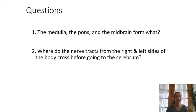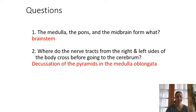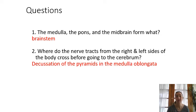Review question: the medulla, pons, and midbrain are all part of what structure? And where do the nerve tracts from the left and right sides of the body cross over before making their way up to the cerebrum? Answer: those three structures are all part of the brainstem. The motor nerve tracts cross over at the decussation of the pyramids, which is located in the medulla oblongata.